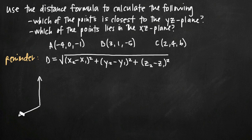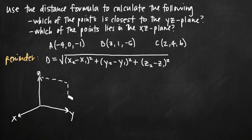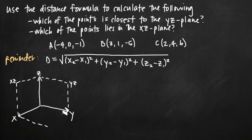If we draw a three-dimensional coordinate system using the right-hand rule, we have x, y, and z — our three coordinate axes. The yz-plane is the plane that includes the y and z coordinate axes. We can also identify the xz-plane — the plane that includes the x and z coordinate axes — and the xy-plane, which is sort of the floor of our coordinate system. So we have the three coordinate planes of our three-dimensional coordinate system.